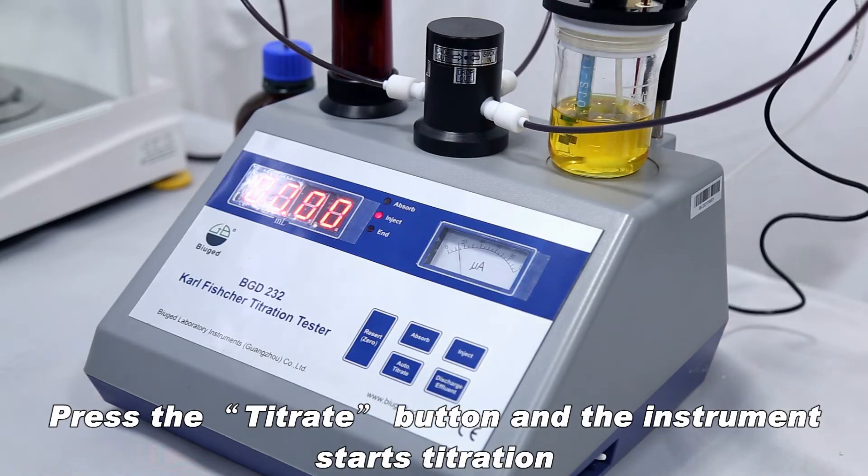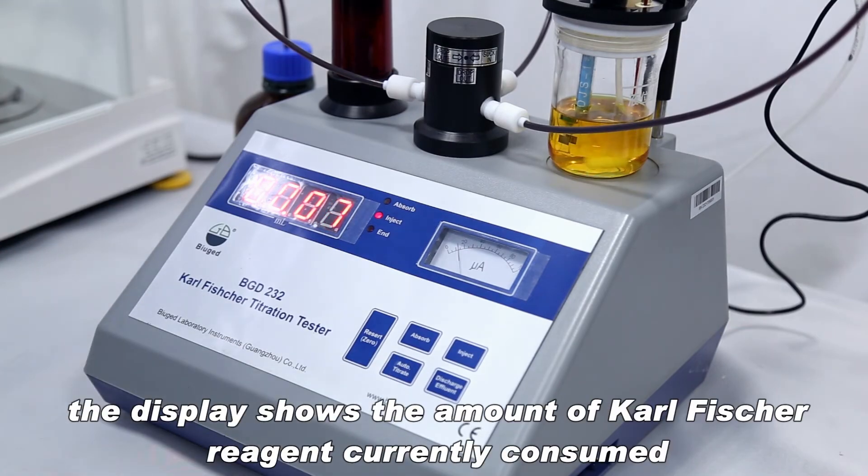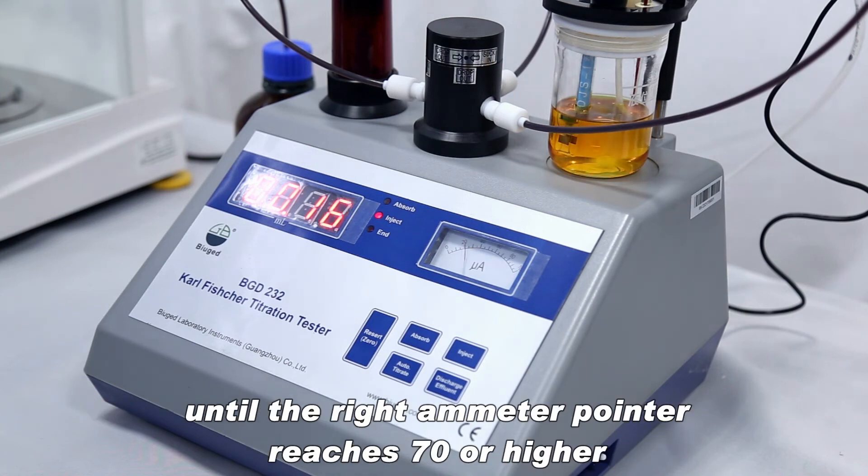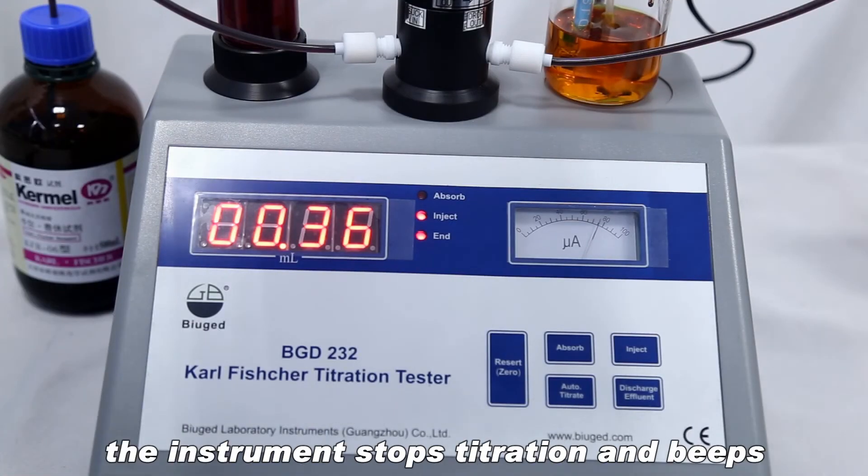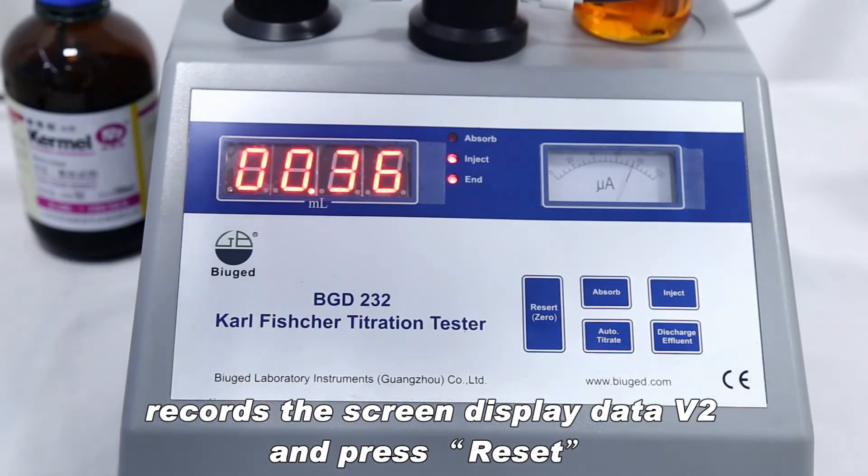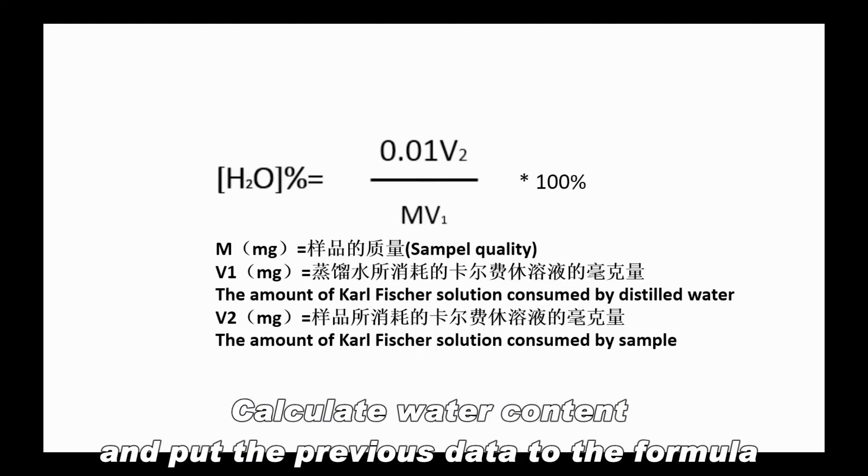Press the titrate button and the instrument starts titration. The display shows the amount of Karl Fischer reagent currently consumed. Until the right ammeter pointer reaches 70 or higher, the instrument stops titration and beeps. Record the screen display data V2 and press reset. Calculate water content and put the previous data to the formula.